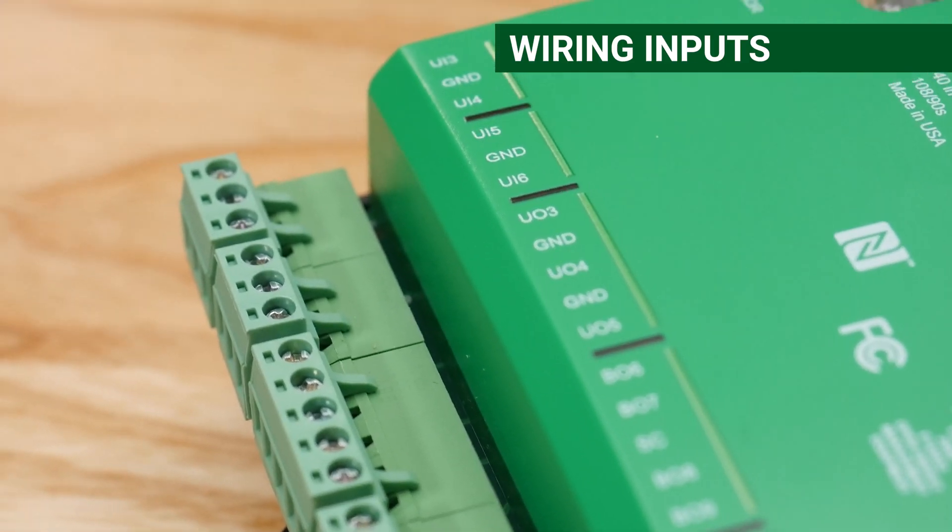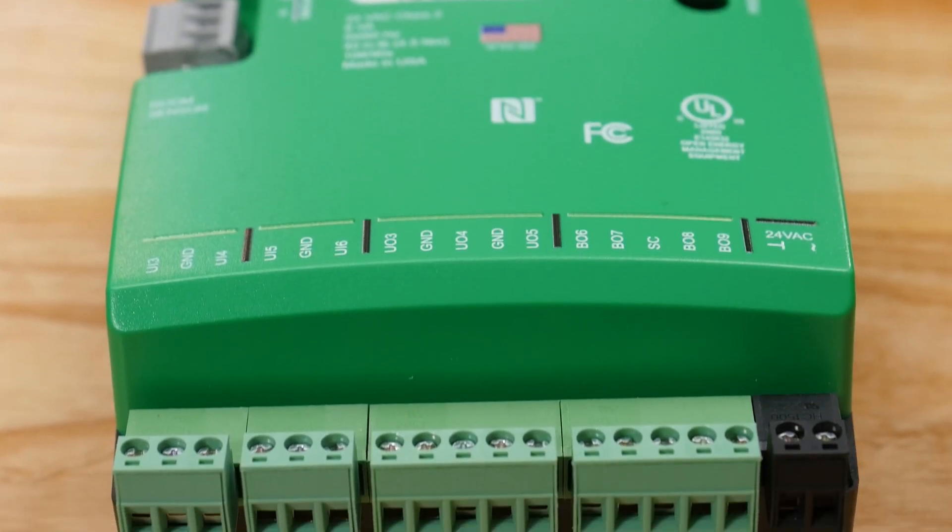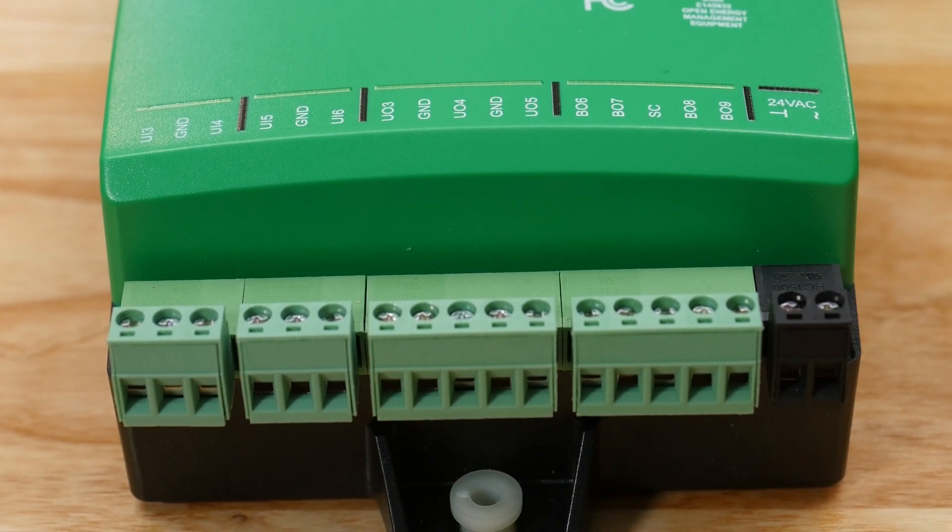All the inputs are universal, meaning they can either be used for analog or binary signals. Looking at the inputs on the bottom of the unit, see the UI for universal input and GND for ground.